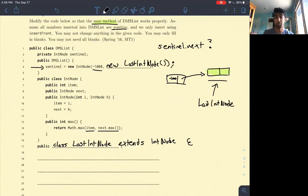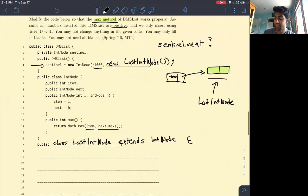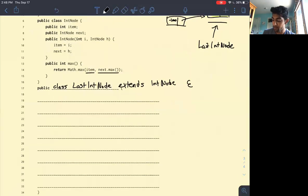So the beauty here is that if we create a last int node instance that overrides the max method from above, right? What we can do here is we can override the max method in the parent class to just return 0. What will happen now, this is really, really cool,